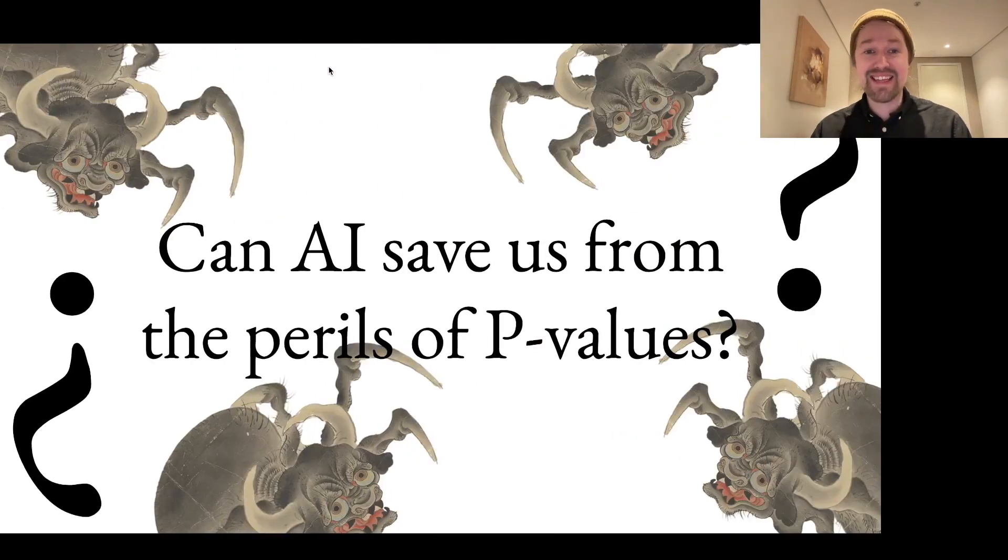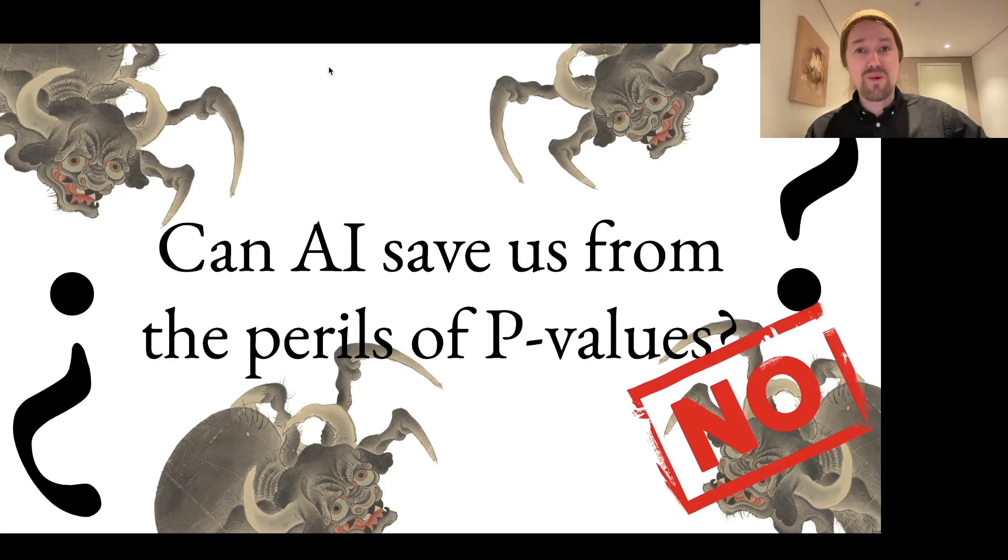So can AI save us from the perils of p-values? Well, if you look at ChatGPT, I think the answer is no. It's learned all the nonsense there is about p-values on the internet, it seems. And if future AI is going to be trained on a large corpus of the internet, I think the answer is still going to be no.